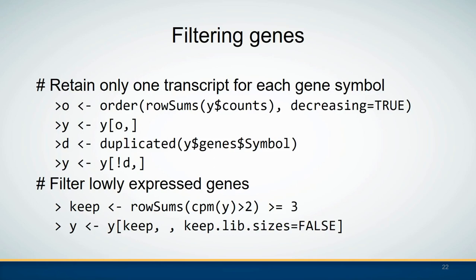Genes with very low counts across all libraries provide very little evidence for differential expression. From a biological point of view, a gene must be expressed at some minimal level before it is likely to be translated into a protein or to be biologically important. The first lines keep only one transcript for each gene symbol, and the following lines filter those lowly expressed genes, keeping genes with at least two counts per million in at least three samples.